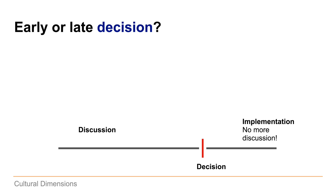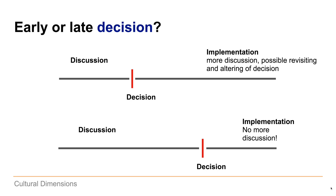Do you have an early or a late decision? In some societies you discuss for a long time, then finally make a decision, and after that you start implementation with no more discussion. Germans are very much used to long discussions, then they decide and there are no more changes. But in other cultures you make a decision just to have a general direction, and during implementation you continue discussing, possibly revisiting and even altering the decision again. If you do this to a German, they will be majorly frustrated.